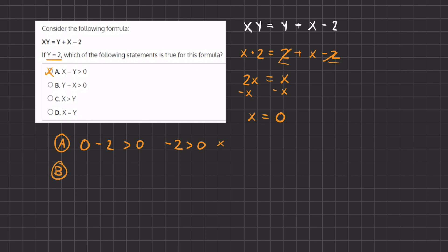Now let's move on to B. We have y which is 2 minus x which is 0 is greater than 0. So here we have 2 is greater than 0 which is the correct statement.